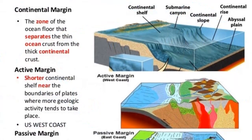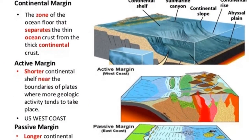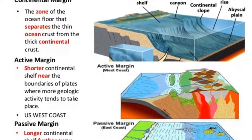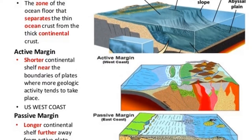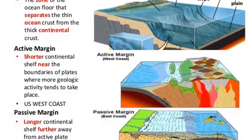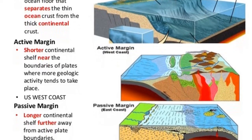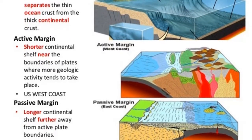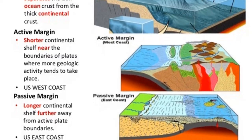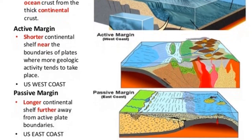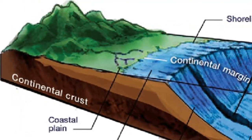By contrast, active continental margins occur where oceanic lithosphere is being subducted beneath the edge of a continent. The result is a relatively narrow margin consisting of highly deformed sediments that were scraped from the descending lithospheric slab. Active continental margins are common around the Pacific Rim, where they parallel deep ocean trenches.